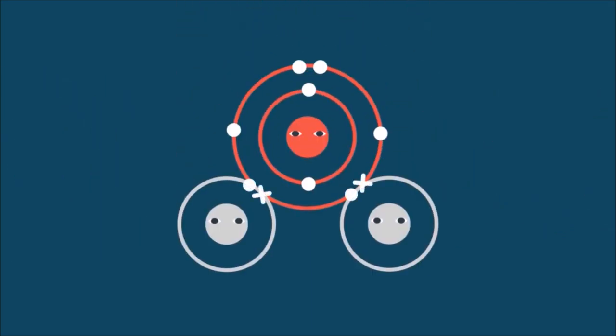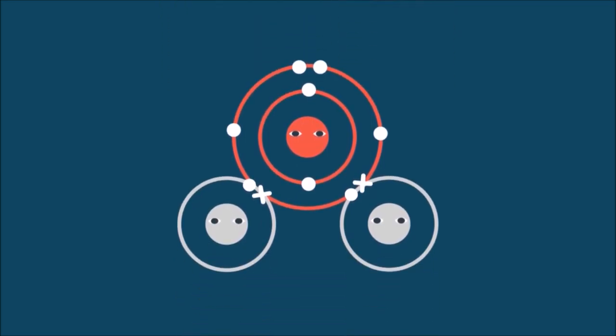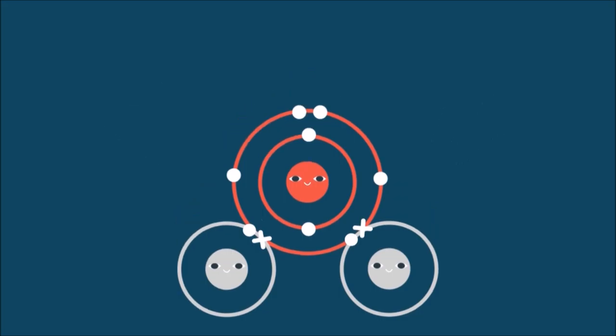So the atoms share their electrons, as shown, forming covalent bonds. Now all three atoms have full outer shells and are very happy. A water molecule is created.